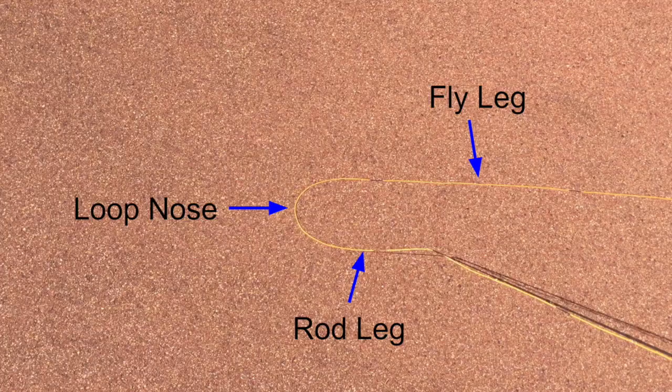There's a lot of confusion out there about what happens inside that loop — where the tension is, where the forces are, what drives that loop forward, why it stays in the air even. Hopefully some of what we're about to show here makes it a little bit easier for you to understand. So to start with, let's define the loop. We have the fly leg connected to the fly, the loop nose which is on the left here, and the rod leg which is connected to the rod tip.